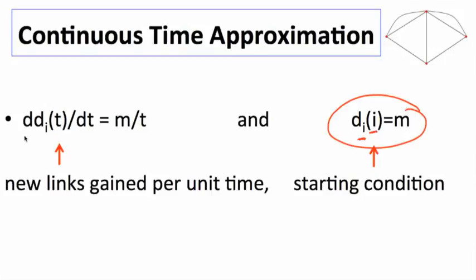Then how does its degree change as we change time? What's the differential of the degree of i with respect to time t? This differential is it's expecting to gain m links over the time period. There's t existing nodes, m new links being formed, so its chance of getting one of those is m over t. So its gain per unit of time is going to be proportional to m over t.